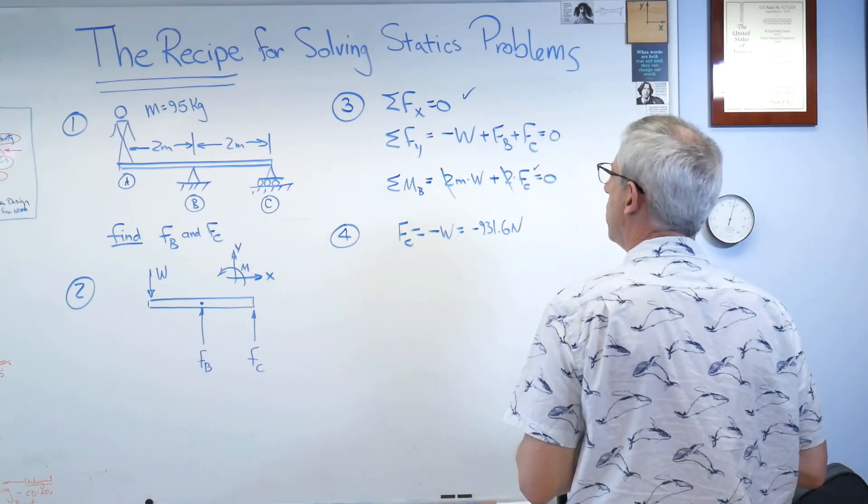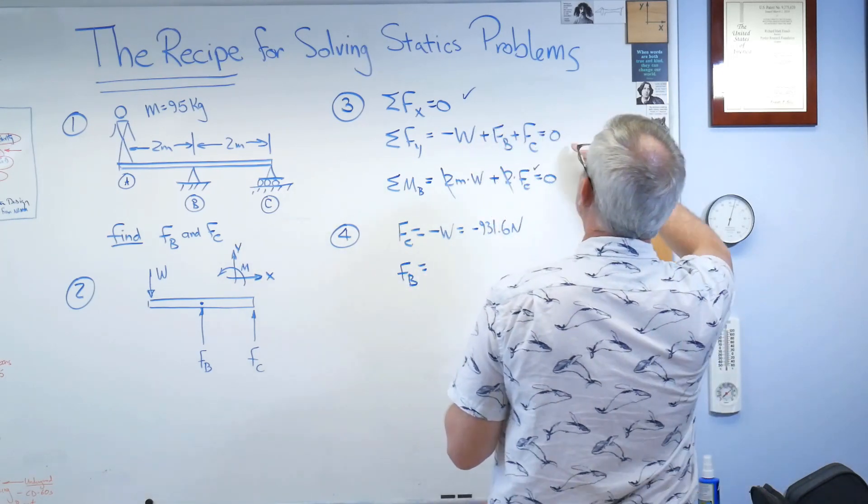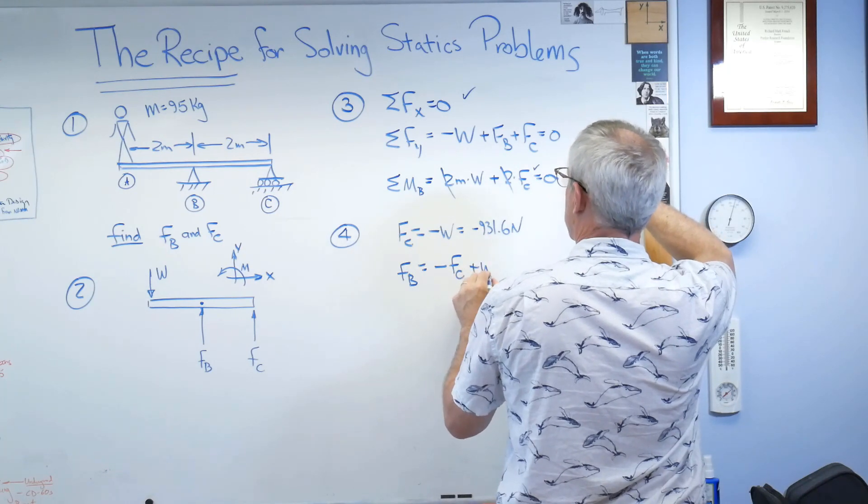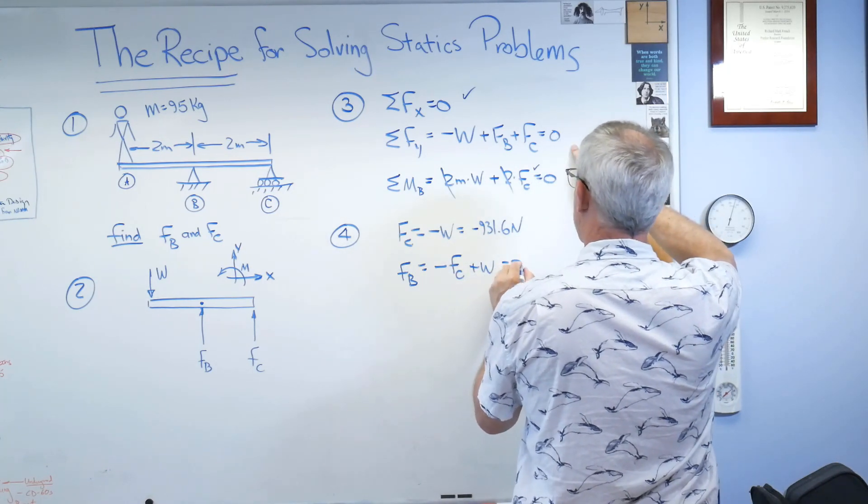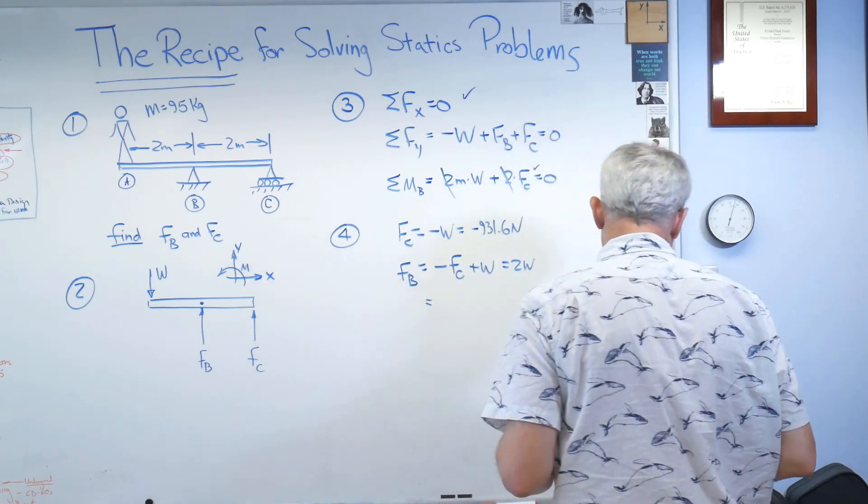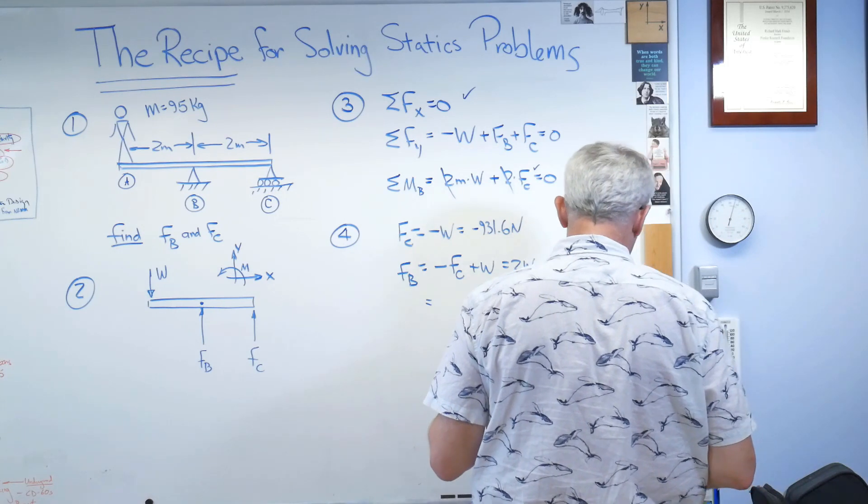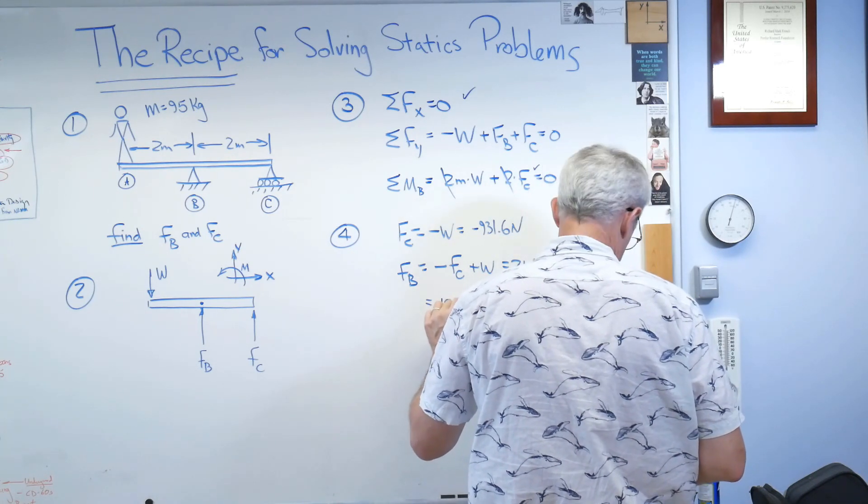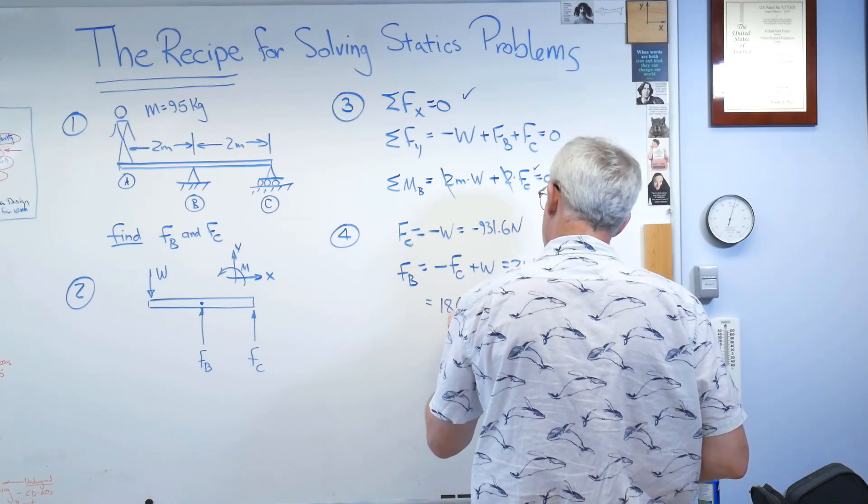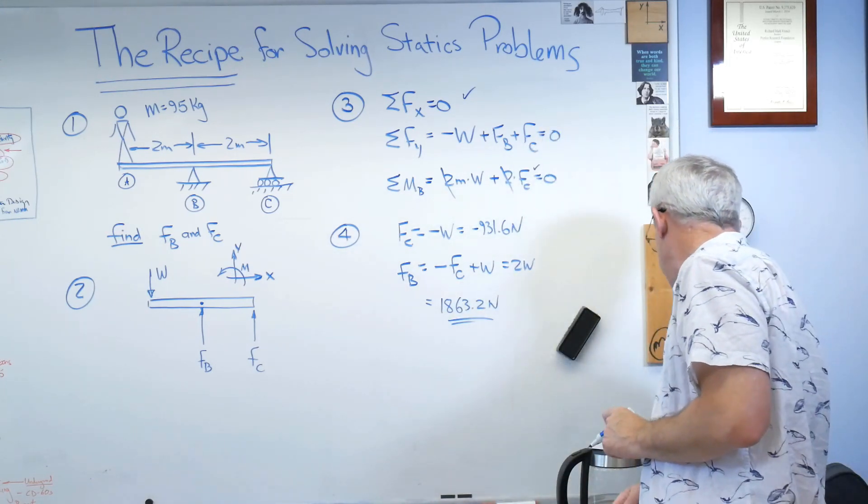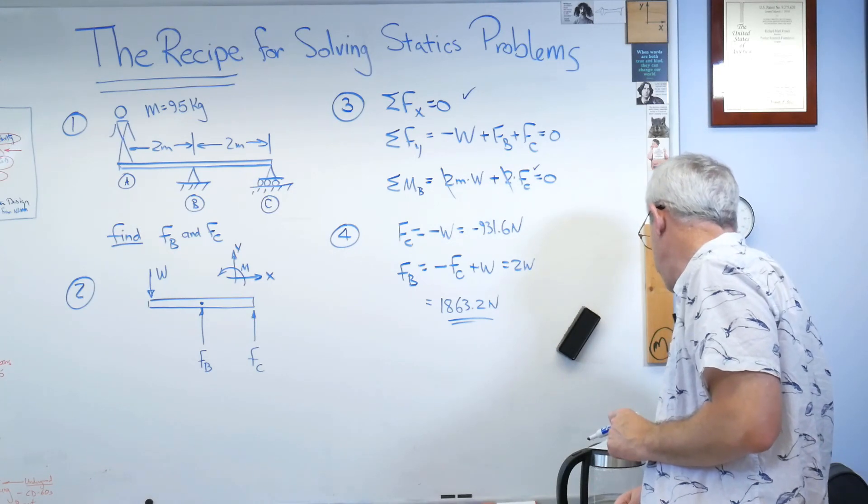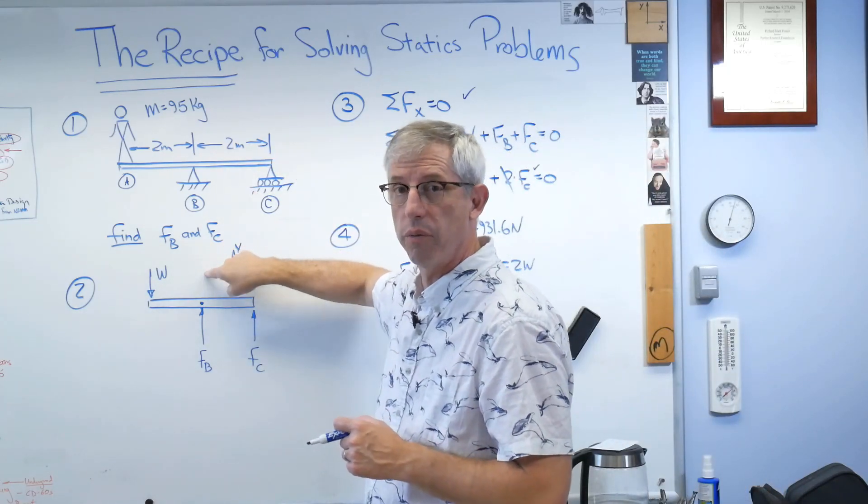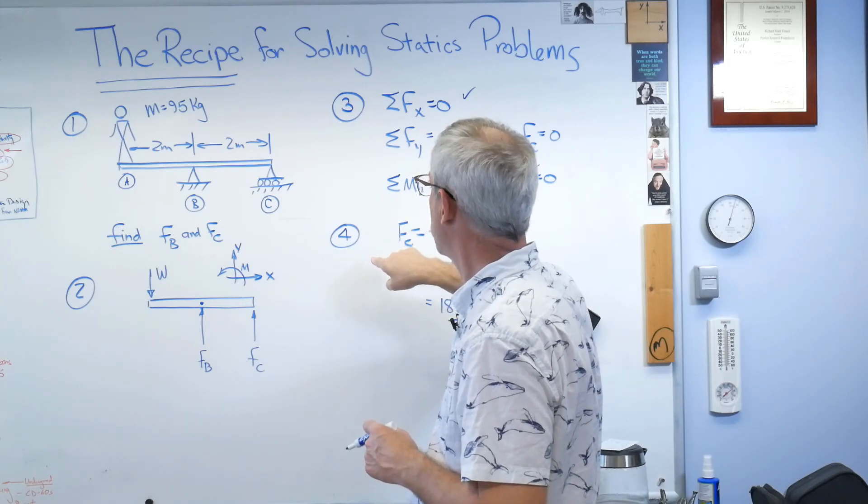Let's solve for Fb. All right. Go up here. Fb is minus fc plus w. Well, fc equals minus w. So that's 2w. All right. So that's 2 times 931.6. And I didn't figure this out beforehand. So that's what, 18. Looks like it's going to be 62 point, do I believe that? 63.2. Boy, I hope I got that right. Or let's see, it's going to be like 418 pounds if you want to work it out that way. So there we go. We've got working diagram. There's one. Free body diagram. Equations of static equilibrium. Solve for something.